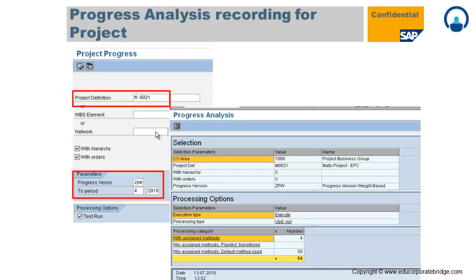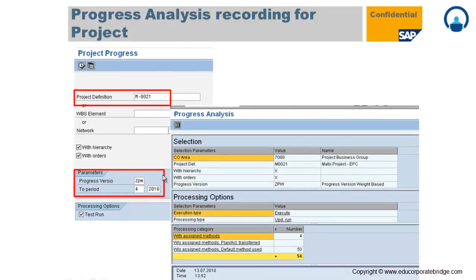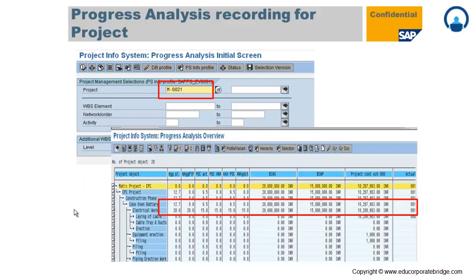For example, 15% actual completion against 20% planned is maintained. There is a transaction code CNE1 where you run the progress analysis for a particular project or WBS, specifying the period, method, and progress version. Running in test mode shows test results; unchecking test run executes the actual progress analysis. After CNE1, you run report CNE5 — the progress analysis report — which provides aggregated and non-aggregated POC, budget cost, work scheduled, budget cost work performed, project cost, and actual work done.